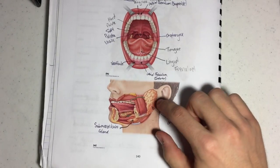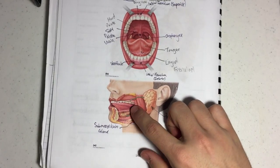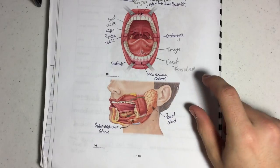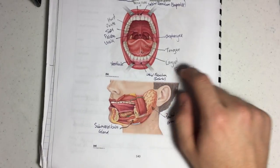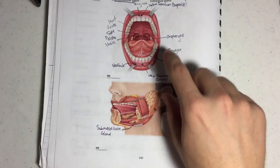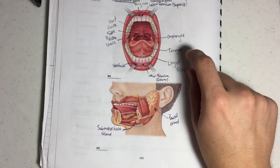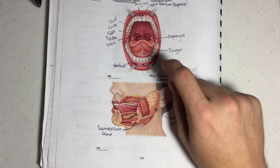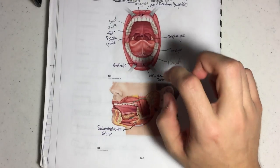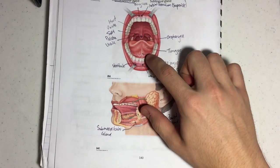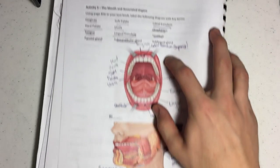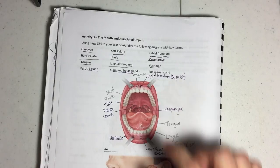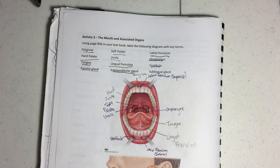The parotid gland has a duct that releases saliva kind of around your second molar, and then the submandibular gland releases it right at the bottom of your lingual frenulum. A frenulum is just a little stringy thing — it looks like a wire on the bottom of your tongue that holds your tongue down to the floor of your mouth. You also have two frenulums on your mouth right here, and they just hold your lips to the gums.